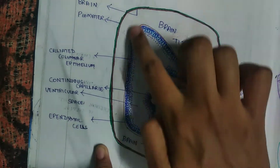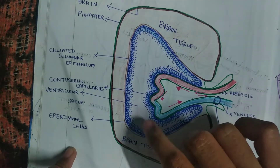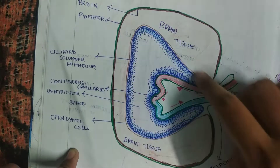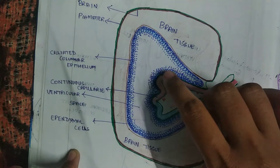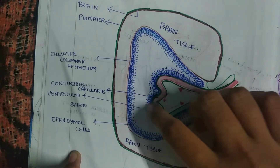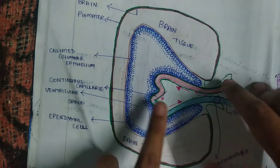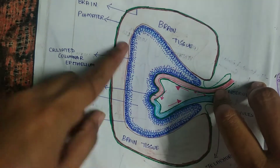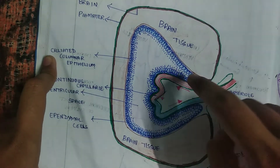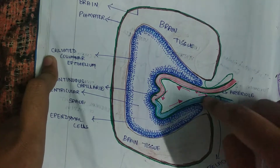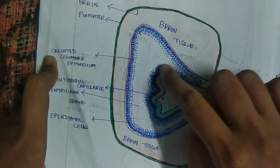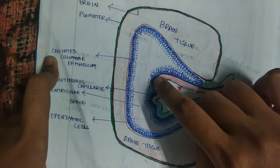The ventricles are lined by ependymal cells, that is nothing but ciliated columnar epithelial cells. These ependymal cells line the ventricle, and the arteries and the capillaries will enter into the ventricle and that is surrounded by ependymal cells. So this choroid plexus is having pia mater, ependymal cells, and capillaries or blood vessels. These are the three components of choroid plexus: ependymal cells, pia mater, and blood vessels.